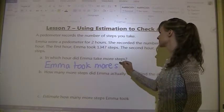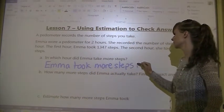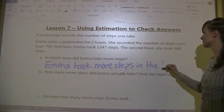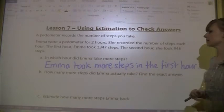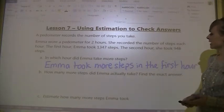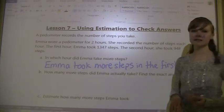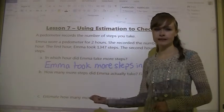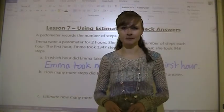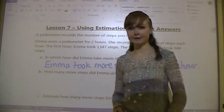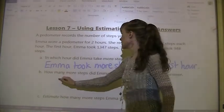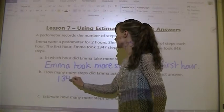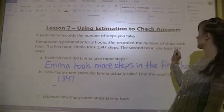Next up, how many more steps did Emma actually take? Find the exact answer. So pause the video, figure out the exact answer, and then play again. You should have the answer for this and what we're doing is we're subtracting 1,347 minus 948.